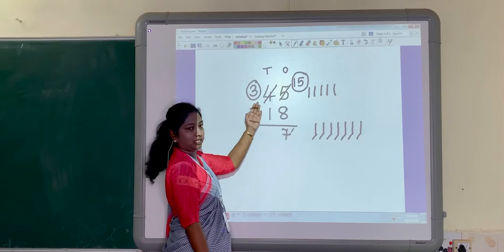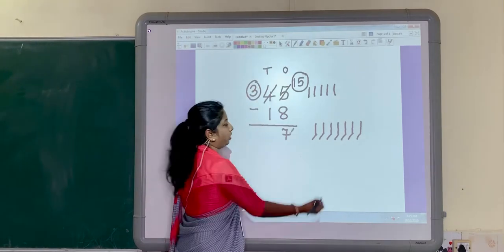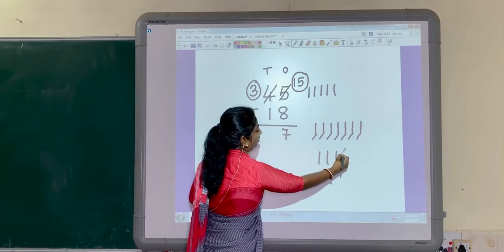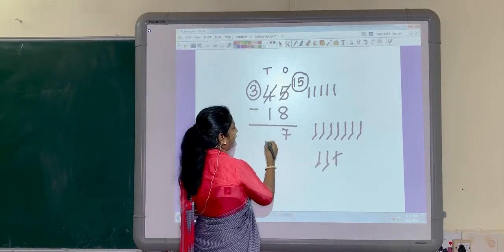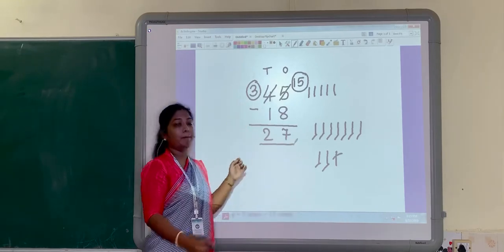Then next, 10's part. Here, we got 3. 3 minus 1. We know 3 minus 1 is 2. So, answer is 27. This is the borrowing method.